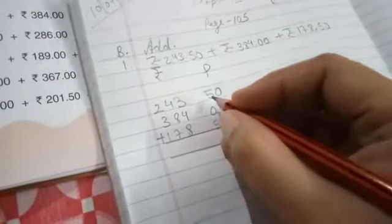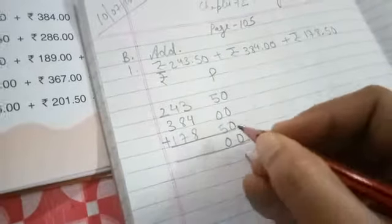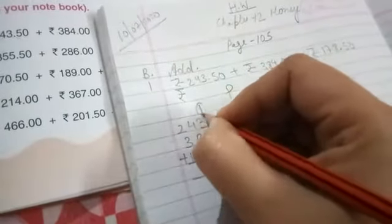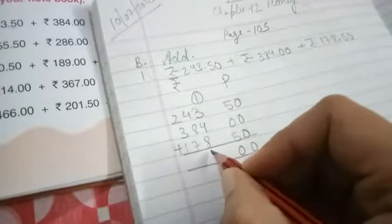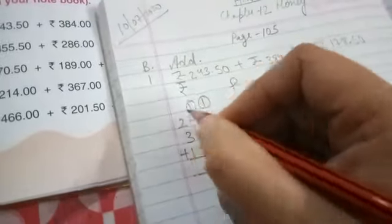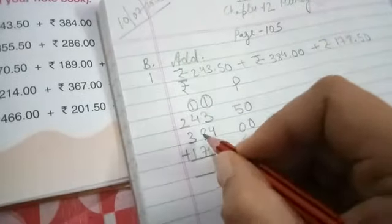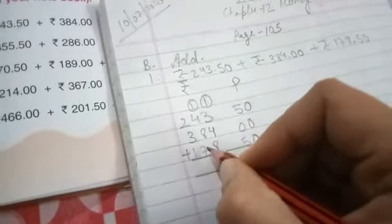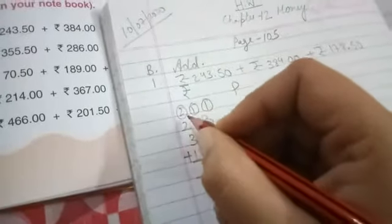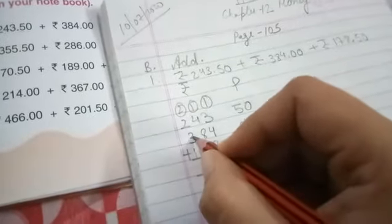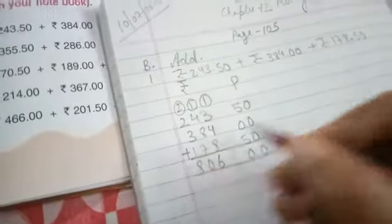0 plus 0 is 0. 5 plus 5 is 10. You know why I have told you to leave your place? To take the carry one. 3 plus 1 is 4, again 4, 8. 8 plus 8 is 16, 6. 1 again carry. 4 plus 1 is 5, 5 plus 8 is 13, 13 plus 7 is 20. So 0 again, 2 you have carry. 2, 2, 4. 4 plus 3 is 7, 7 plus 1 is 8. Completed.